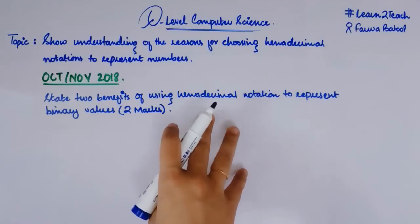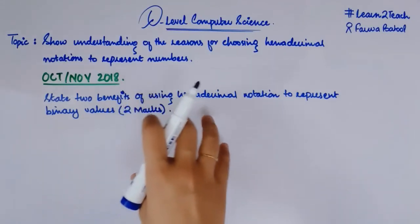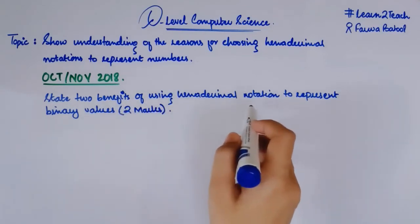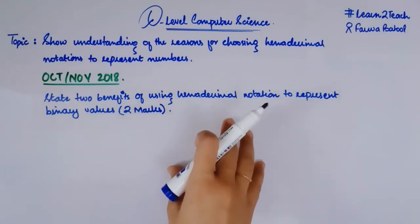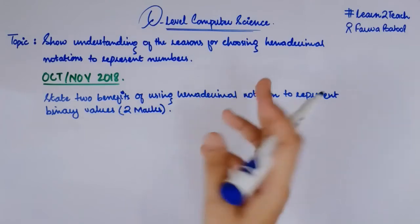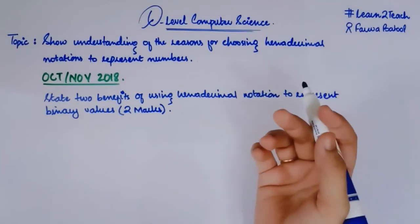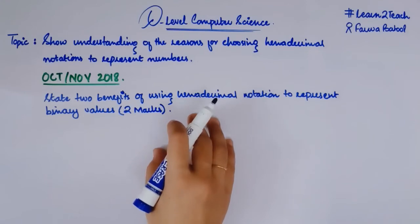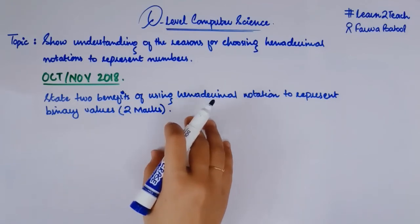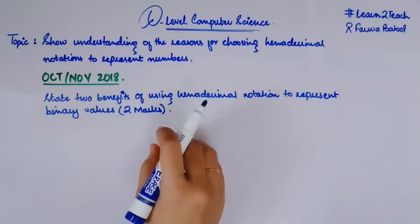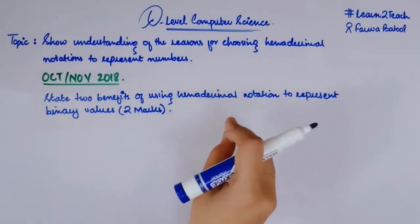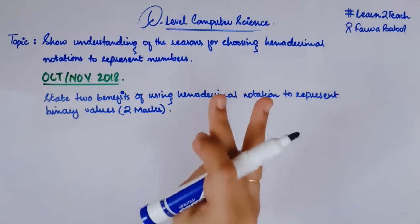So here we have an example — a past paper question from October-November 2018 that is related to this topic. The question is: 'State 2 benefits of using hexadecimal notation to represent binary values.' Here we need to give 2 points or 2 benefits of using hexadecimal notation to represent a binary number. We have discussed many of the benefits, so let me sum up all these and give you points so that you can write them in a very organized manner in your exam.